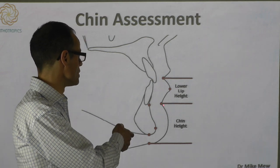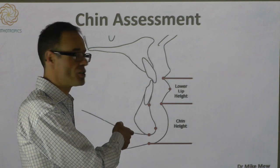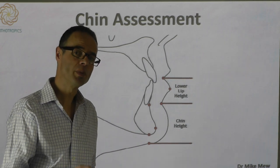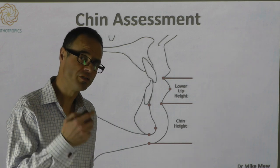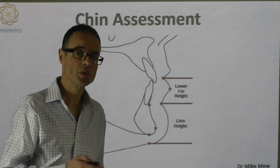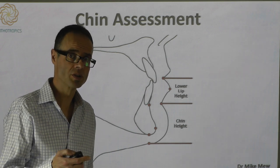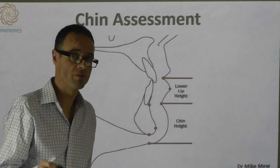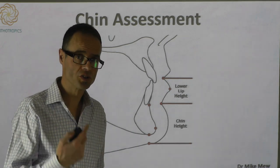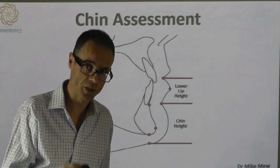The chin can be divided between the lower lip height and the chin height. This is a relatively arbitrary position. If you have a deep mento-labial fold, it's fairly easy to make a mark here. But some people don't have deep mento-labial folds — some people don't have mento-labial folds at all. So this is quite obvious on some people and quite difficult to determine on others.